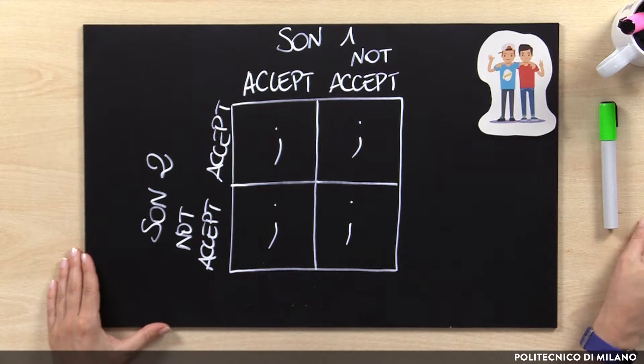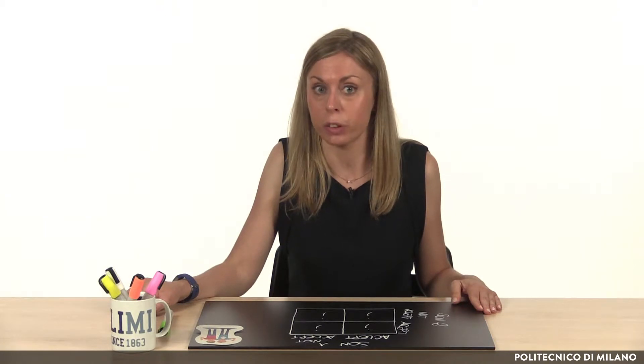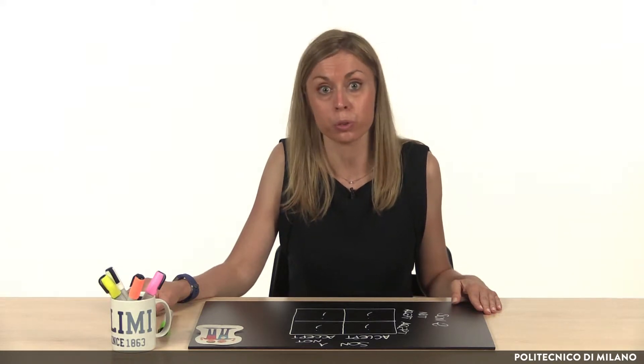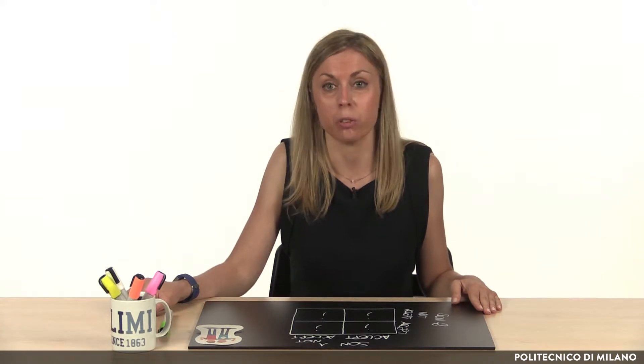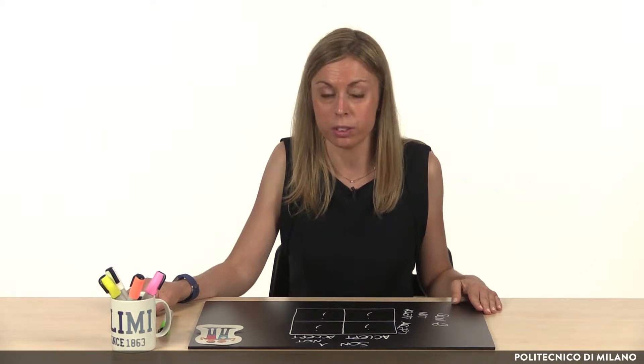A father has two sons and is proposing to each of them independently and singularly an agreement. The father is giving one euro to each son if he accepts, on the condition that he is giving three euros to his brother. We are now going to fill in the payoff matrix, using as payoffs the money achieved, and implying that the two sons are rational in taking their choices.